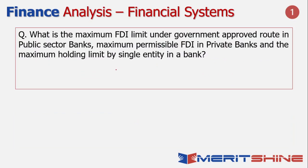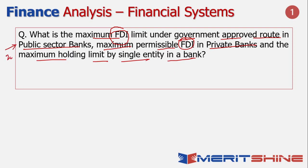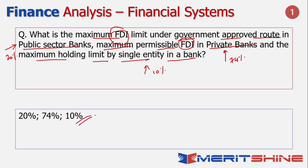Another one-mark question on financial systems talked about maximum FDI limits. For public sector banks under the government-approved route, the maximum limit is 20%. For private banks, maximum permissible FDI is 74%. The maximum holding by a single entity in a bank is 10%. So the answer was 20, 74, and 10. This question also specifically tested the public sector and private sector bank limits — something we had covered in our test series as well.